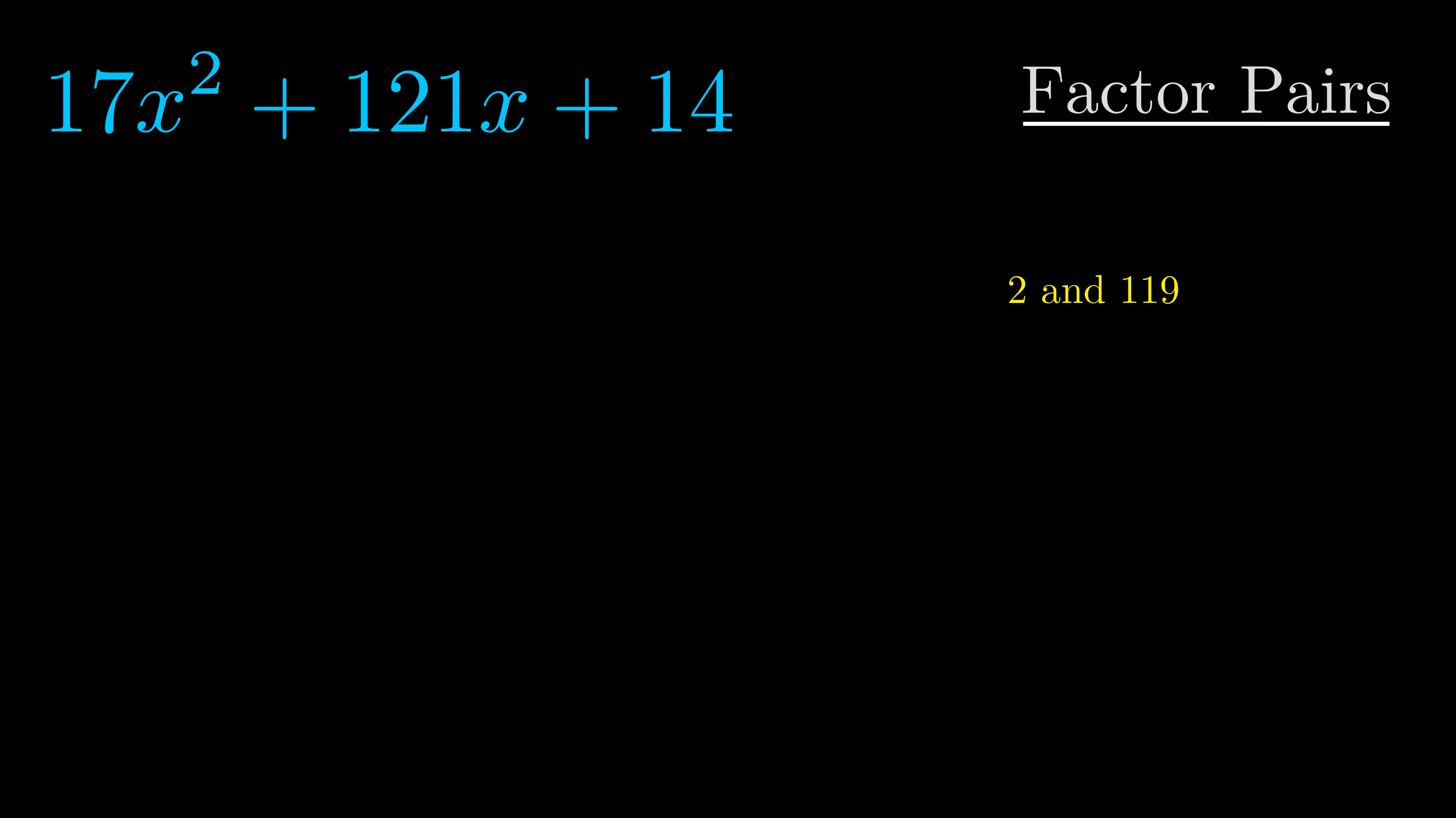Now once we have this factor pair what we want to do is we want to use it to split up the b value.